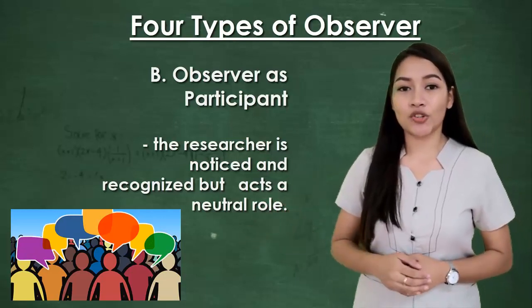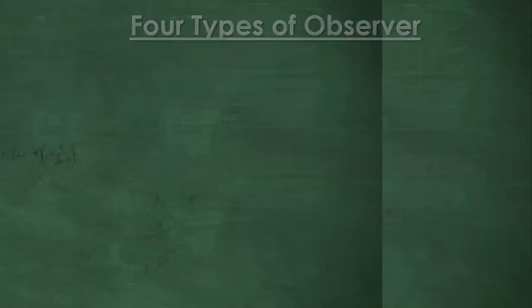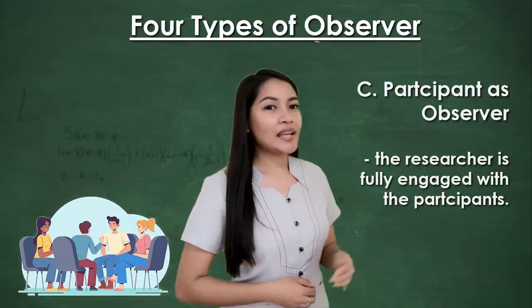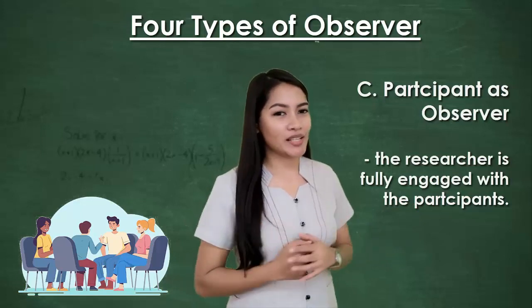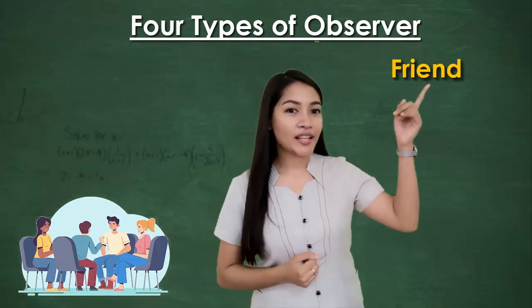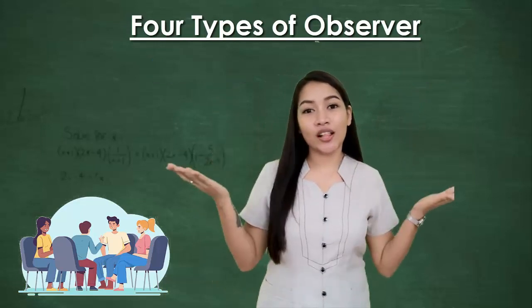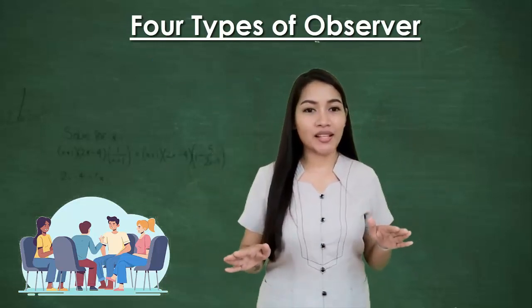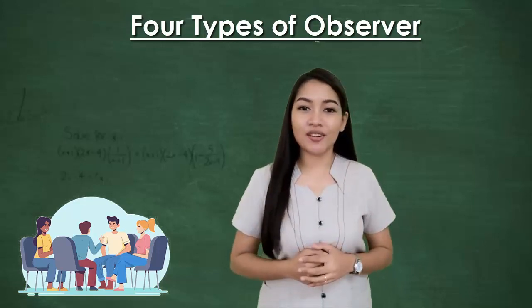Number three: participant as observer. Here the researcher is fully engaged with the participants. She is more of a friend or colleague than a neutral third party. While there is full interaction with participants, they still know that she is a researcher.